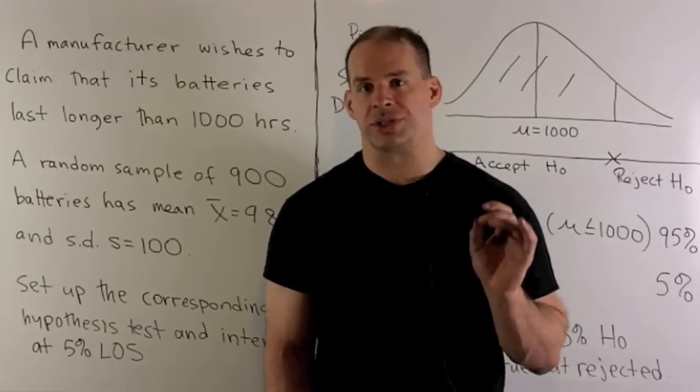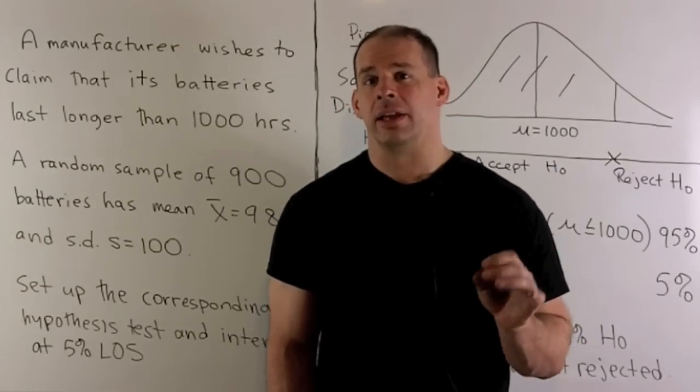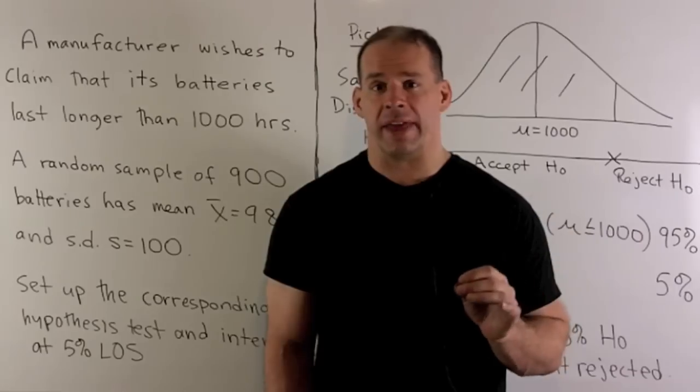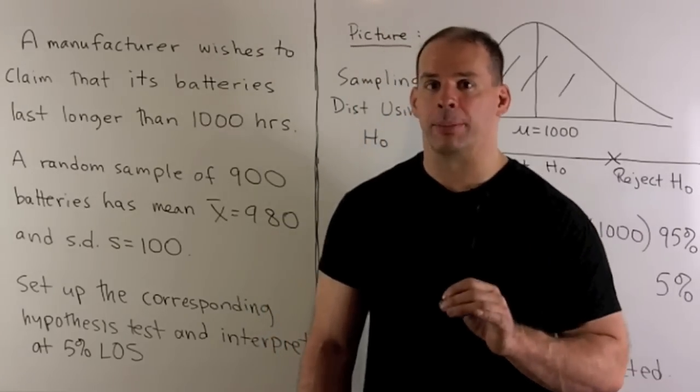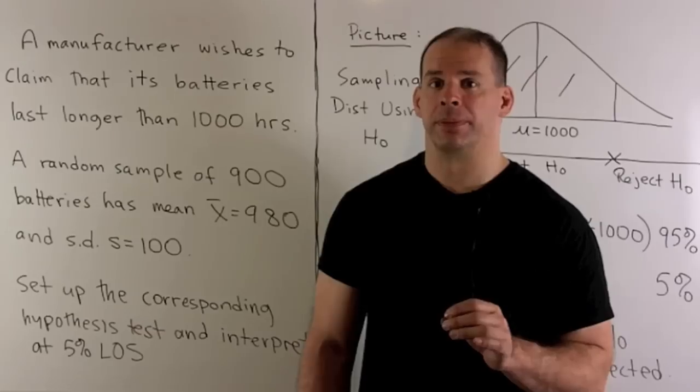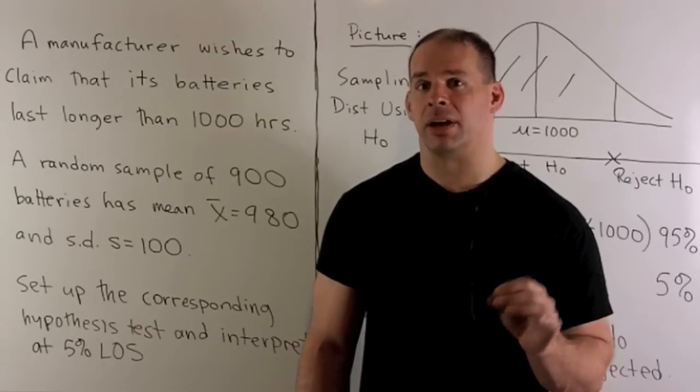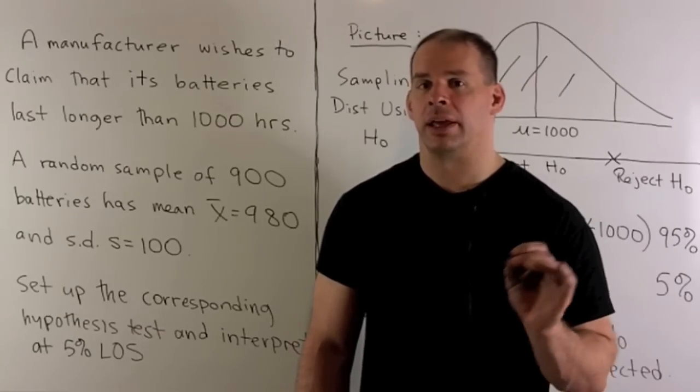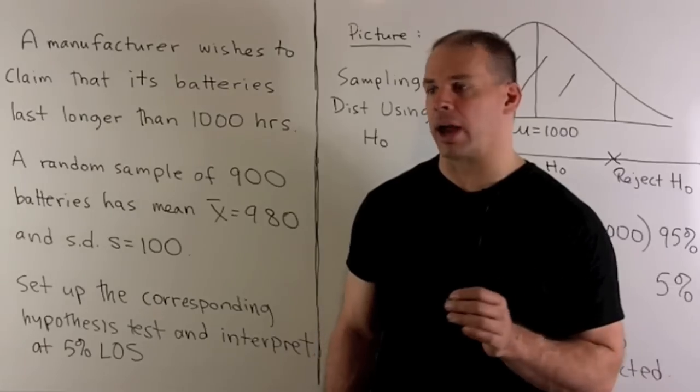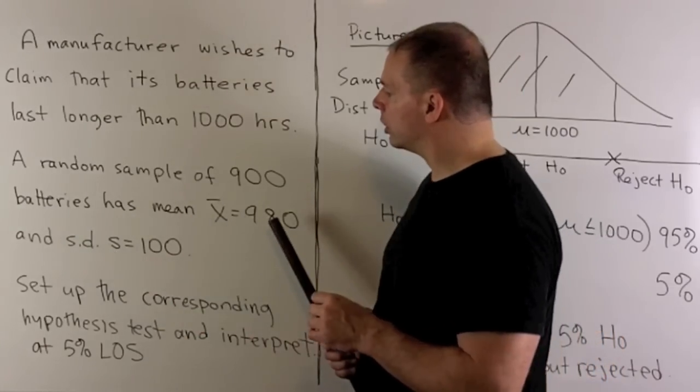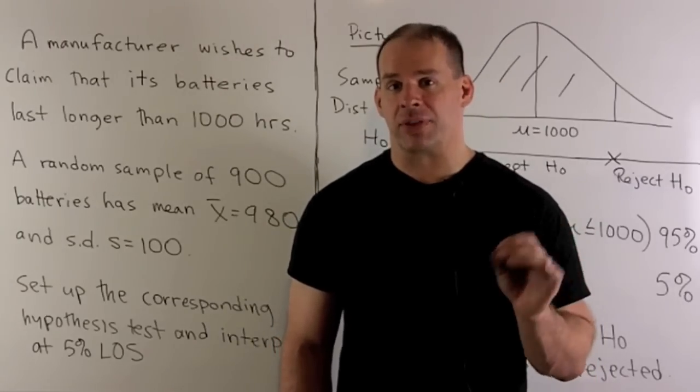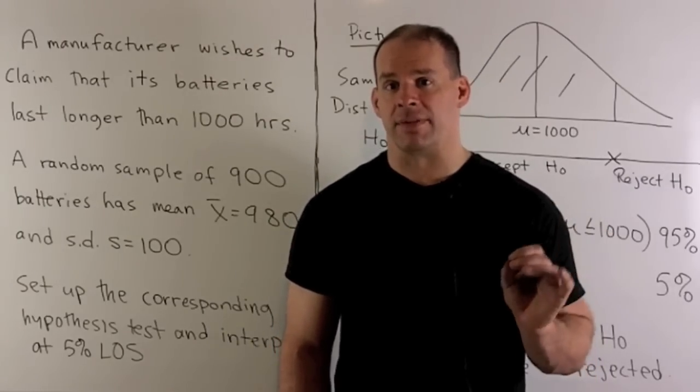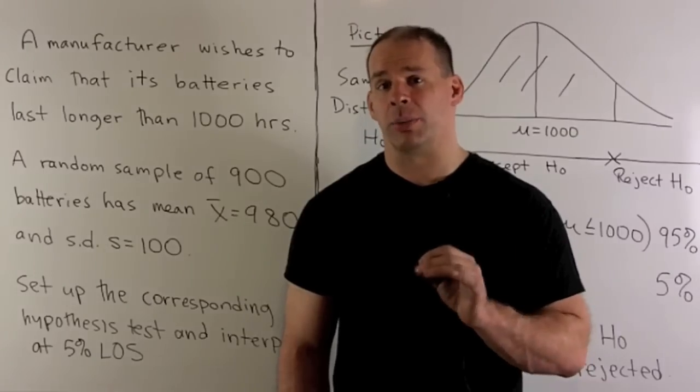A manufacturer wishes to claim that its batteries last longer than 1,000 hours. A random sample of 900 batteries has a mean lifetime of 980 hours and a standard deviation of 100 hours. Set up the corresponding hypothesis test at a 5% level of significance and interpret your result.